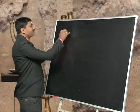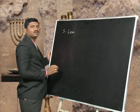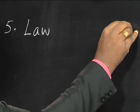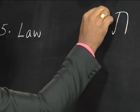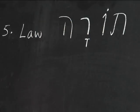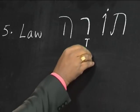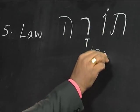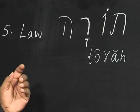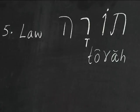The fifth word is the word for 'law.' The Hebrew word for law is Torah — Tav, Holem Vav, Resh, and Qamats He. So Torah, which is a feminine noun — specifically a feminine noun singular word.